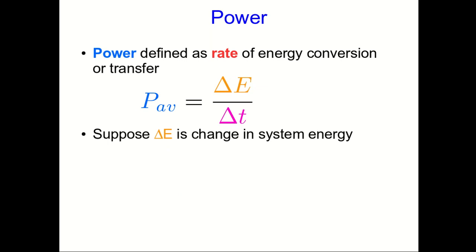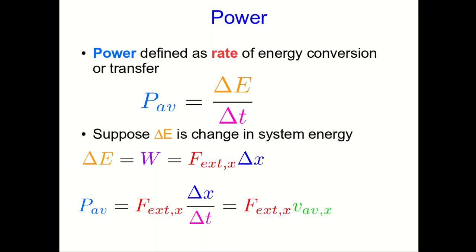Suppose that that delta E actually is a change in system energy, which is what we usually mean by delta E. Then it's equal to the work done on the system, which, in a simple case, could be a force, an external force, times the displacement. In that case, now our average power looks like this, and the delta X over delta T is just the average velocity. So that's a fairly useful common expression that can get you the power if you just know the force acting on an object and the velocity that the object is moving at. And, of course, again, you can take a limit as delta T goes to zero to get an instantaneous power when both the force and the velocity are changing.